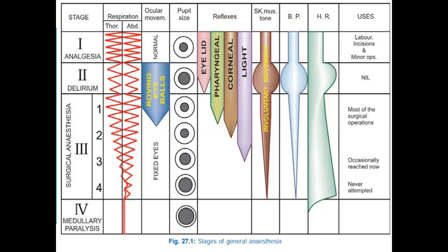Plane 3 spans from beginning to completion of intercostal muscle paralysis. Diaphragmatic respiration persists despite progressive intercostal paralysis. Pupils are dilated and the light reflex is abolished. The laryngeal reflex is lost in Plane 2 but can still be initiated by painful stimuli from dilatation of the anus or cervix. This was the desired plane for surgery when muscle relaxants were not used.